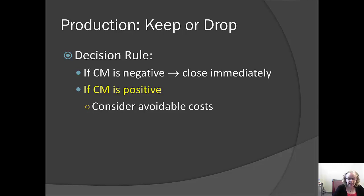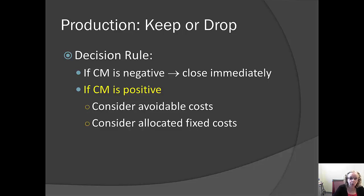In addition, sometimes selling and administrative costs are allocated to the firm's various product lines. We need to think about whether any allocated fixed costs from selling and administrative will go away or whether they will remain. Because if they remain, they will need to be covered by the other products we make.